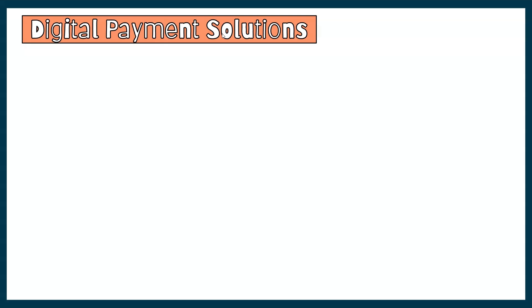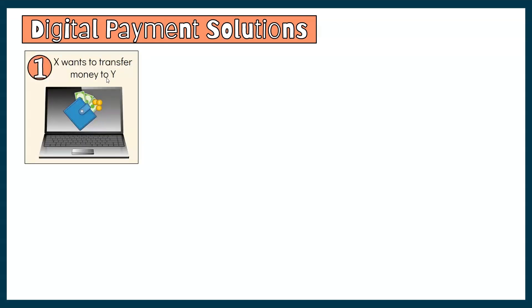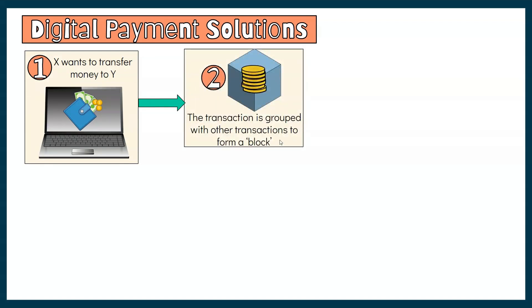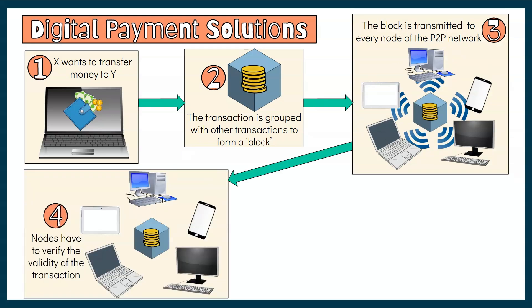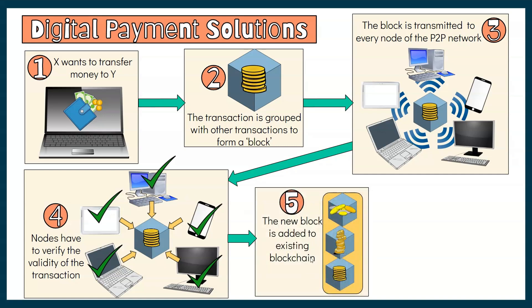Digital currency as payment transactions is an example application of blockchain technology. When user X wants to transfer money to user Y, the transaction is grouped with other transactions to form a block. This block is transmitted to nodes across the blockchain's peer-to-peer network, where the nodes verify its validity. Miners on the network compete to solve a cryptographic puzzle, a process called mining. The first miner to solve it gets rewarded. Once a valid solution is found, the block is added to the blockchain, which is an immutable, transparent ledger of all transactions.